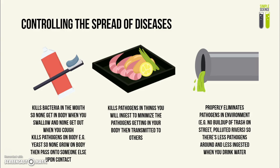Proper treatment of garbage and sewage will reduce the number of pathogens available in the environment. Most pathogens thrive in damp and dirty conditions and can feed on trash. But if streets and homes are kept clean, there will be a much lower number of those pathogens around, so you and others have less chance of getting infected from each other or from the environment itself.